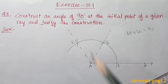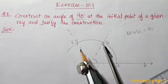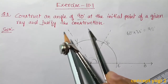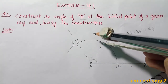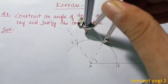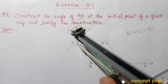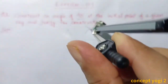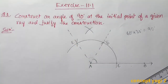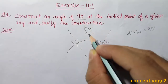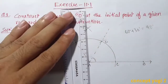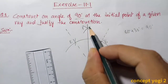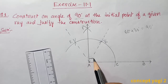Now we will bisect angle DAE. To do that, place the compass at D and take a radius more than half, and draw an arc. Similarly, place the compass at E with the same radius and draw another arc. The two arcs intersect — save this point as F. Now we will join point F and A. In this way we get a 90 degree angle.